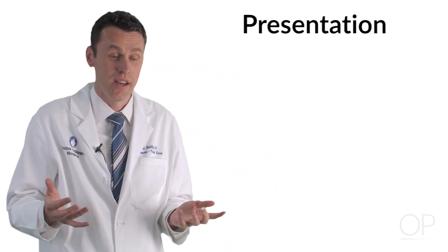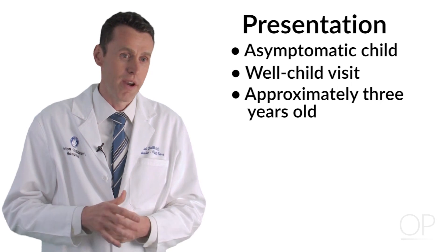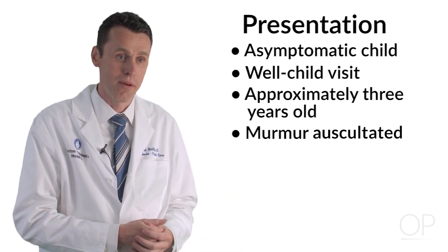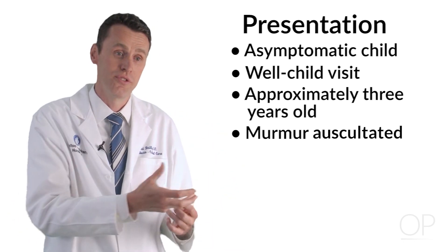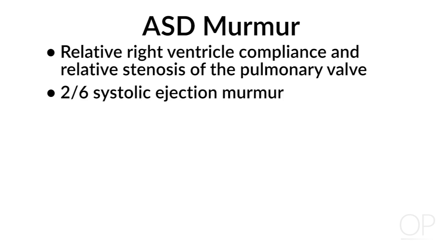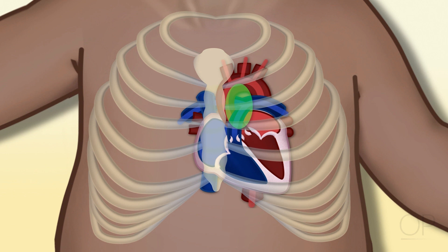Presentation. These patients typically present as a perfectly well, asymptomatic child showing up for a well child check around three years old. Parents have no complaints or concerns, but during the check someone hears a murmur — one that hasn't been heard on prior occasions due to these compliance issues. The RV has finally relaxed to the point where there's enough flow through the right side of the heart to create a relative stenosis of the pulmonary valve. You hear a 2 over 6 systolic ejection murmur as blood flows across the pulmonary valve, which itself is normal — there's just extra blood flow from the atrial level shunt, heard at the left upper sternal border.